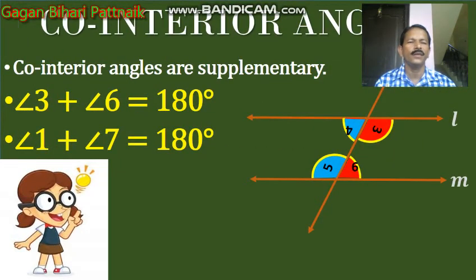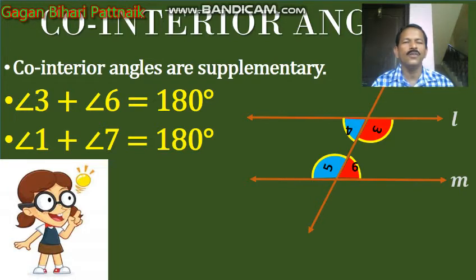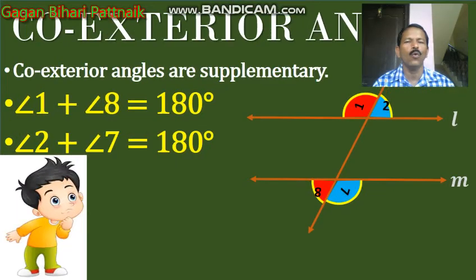Then co-interior angles. Co-interior angles are supplementary. Co-interior angles are the interior angles which lie on one side of the transversal. Angle 3 plus angle 6 is equal to 180 degrees, and angle 4 plus angle 5 is equal to 180 degrees. Then co-exterior angles are also supplementary: angle 1 plus angle 8 is equal to 180 degrees, and angle 2 plus angle 7 is equal to 180 degrees. Co-exterior angles are the angles which lie outside the two parallel lines L and M on one side of the transversal.